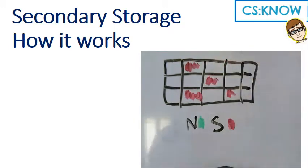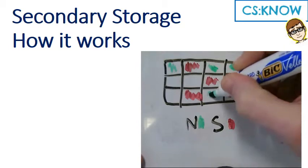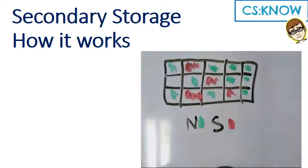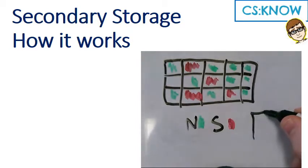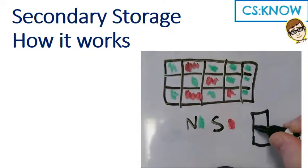So what a one could be north and a zero could be south. As a magnet reads over it, it works out whether it's north or south charge and then it gives you a zero or one.